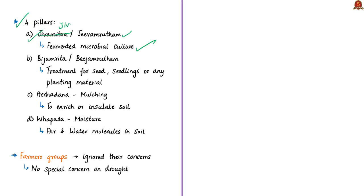Jivamrita enhances soil microbiome through the application of cow dung, cow urine, and other local ingredients. It provides nutrients but most importantly acts as a catalyst that promotes the activity of microorganisms in the soil and increases earthworm activity. Jivamrita also helps to prevent fungal and bacterial plant diseases. The second pillar is Bijamrita or Bijamrutam — a treatment used for seeds, seedlings, or any planting material.